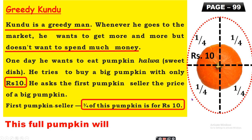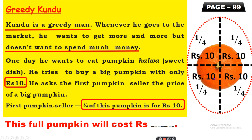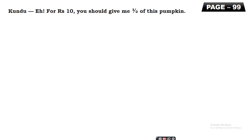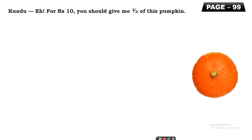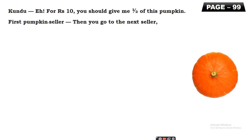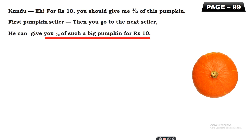The question is: what will the full pumpkin cost? One-fourth costs rupees 10. So four times 10 — that means 10 fours are 40 rupees. The full pumpkin costs rupees 40. Now Kuddu says, 'For rupees 10 you should give me half of this pumpkin.' The first seller says then go to the next seller — he can give you half of such a big pumpkin for rupees 10.